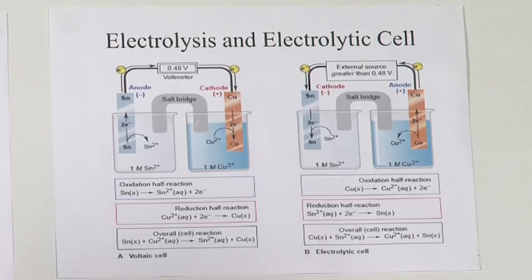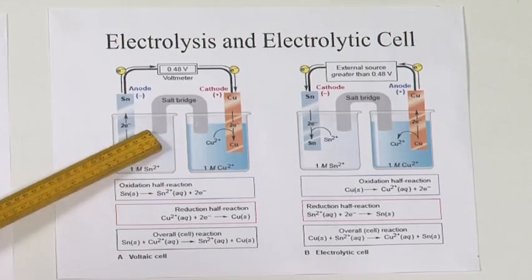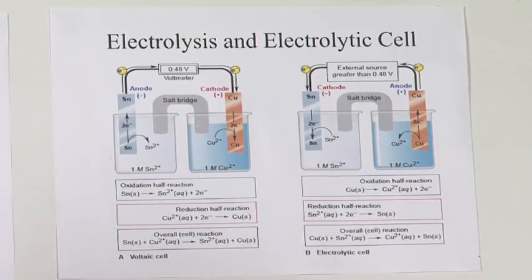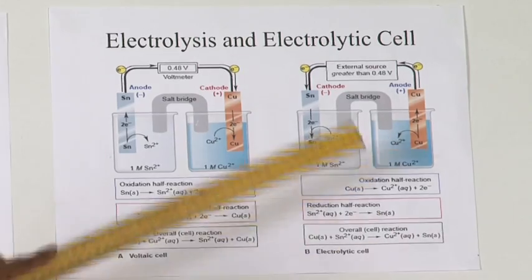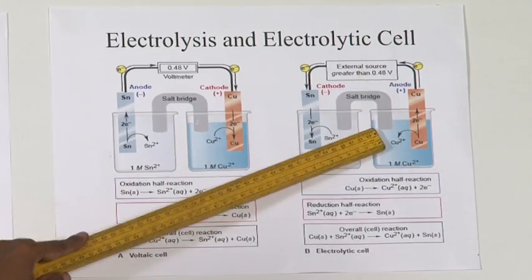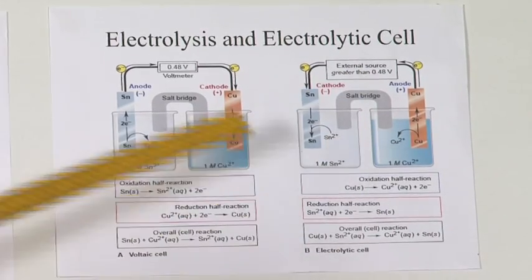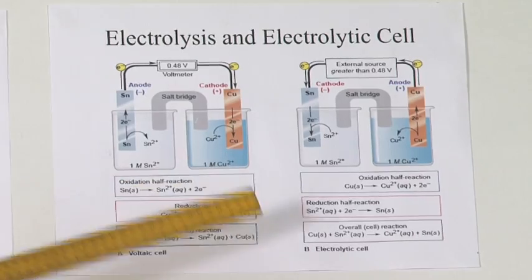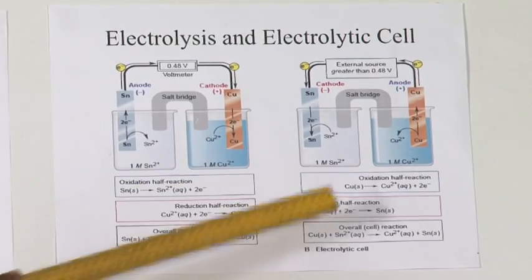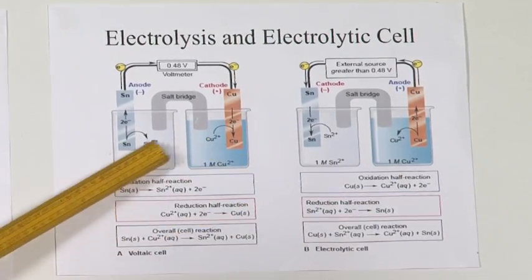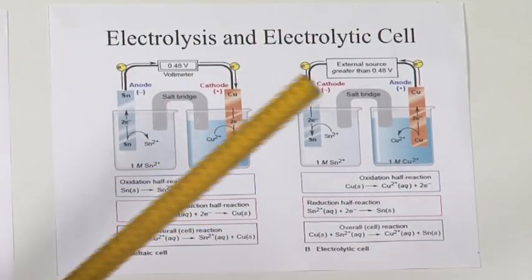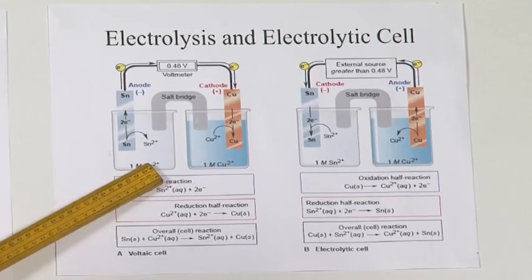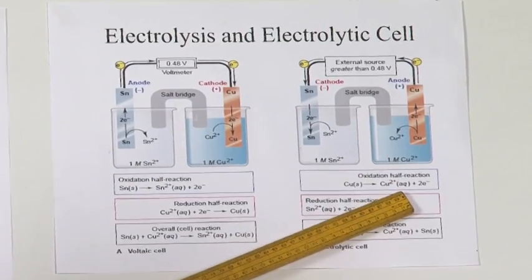In lower classes you may have studied that anodes are positively charged and cathodes are negatively charged. That is in context to the electrolytic cell, not in context to the electrochemical cell. So anode should be defined as the electrode where oxidation takes place — which is the same whether it is an electrochemical cell or an electrolytic cell.